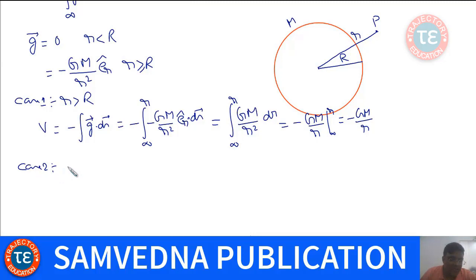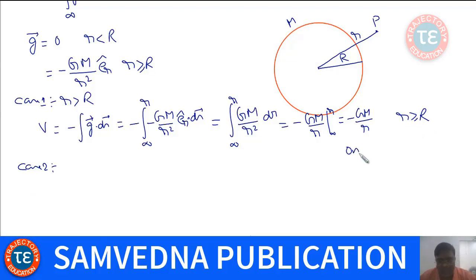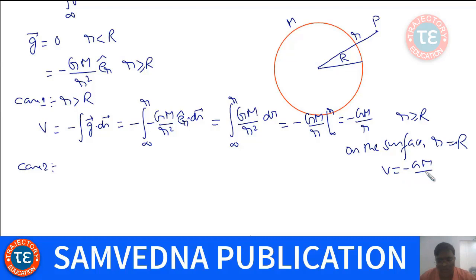On the surface, where R equals capital R, the potential is simply minus GM/R. That is the potential on the surface of the spherical shell.